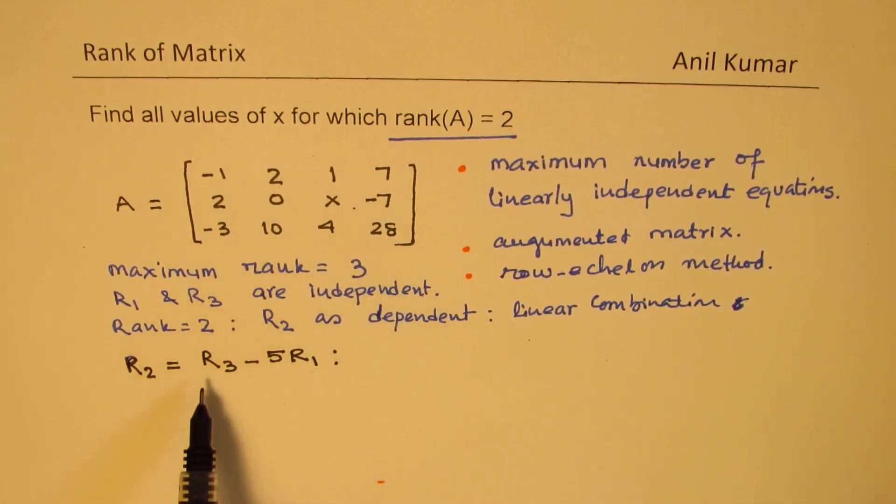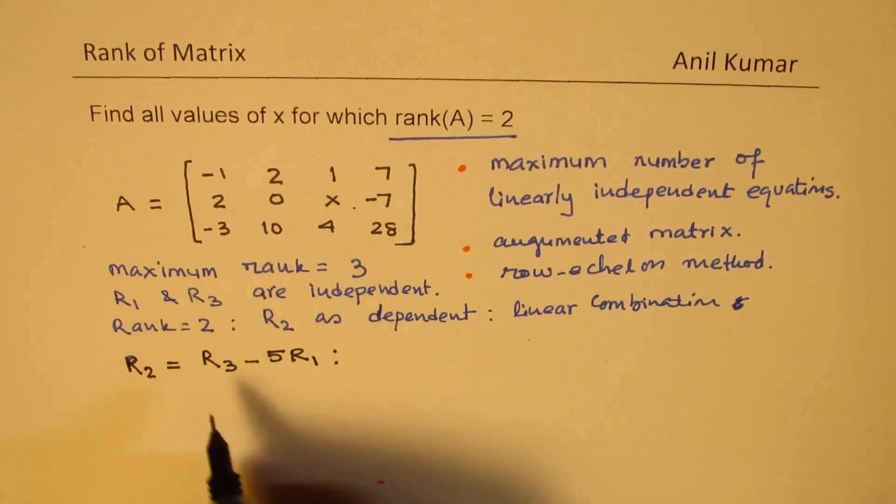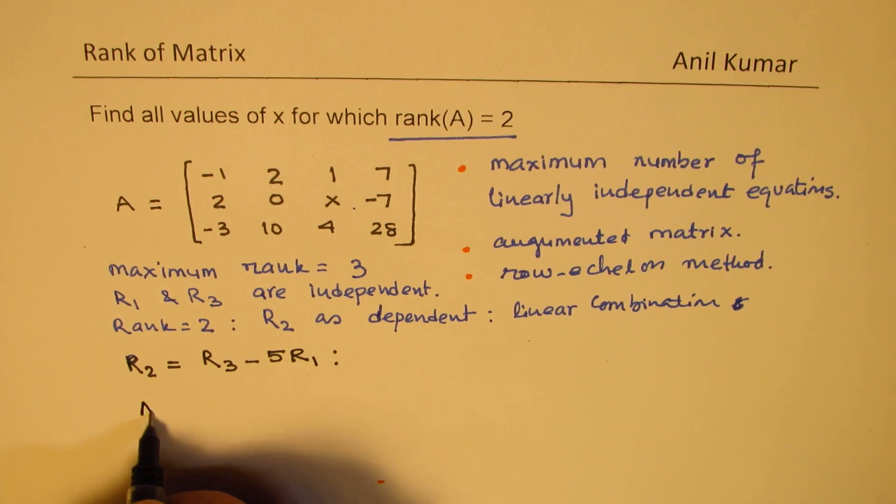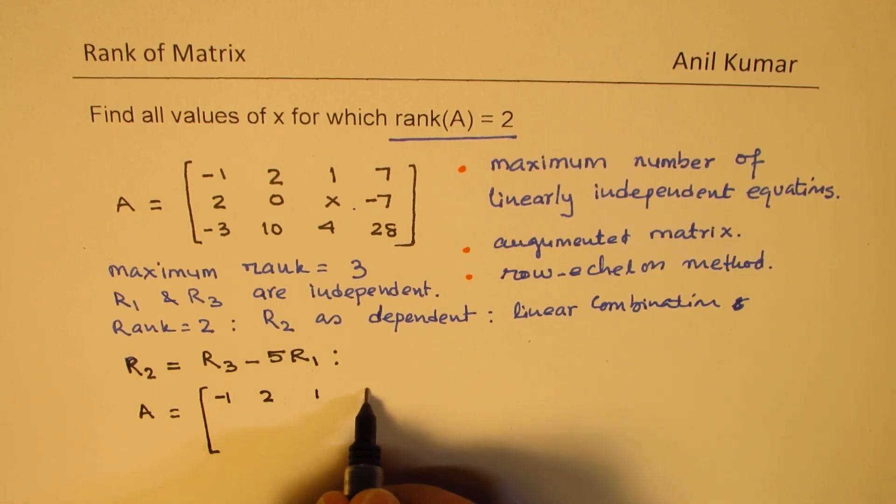What should be R2? We will try R3 minus 5 times R1. These are the values for R3. If we do this, then we get the matrix as what? We will write row 1 as such, which is minus 1, 2, 1 and 7.